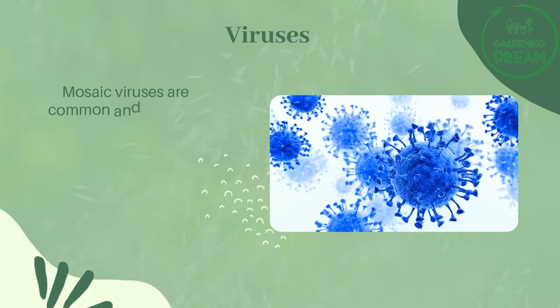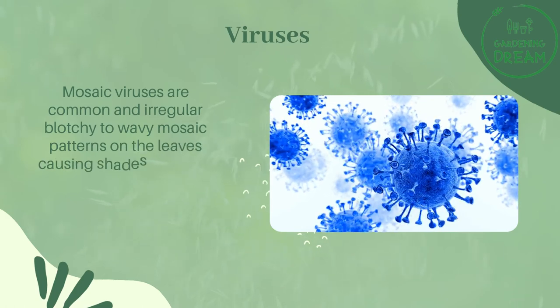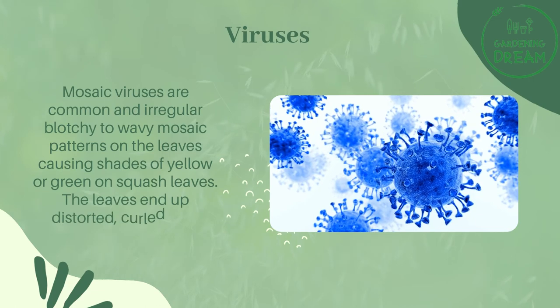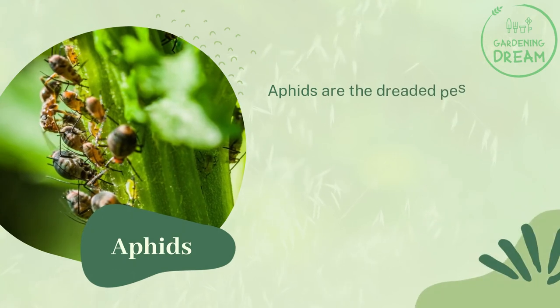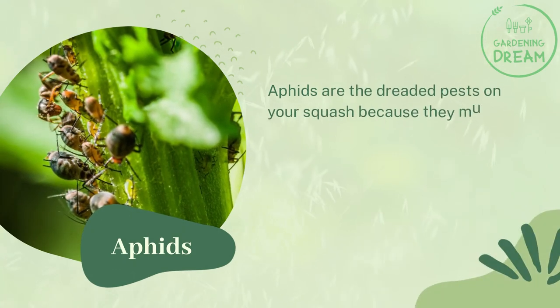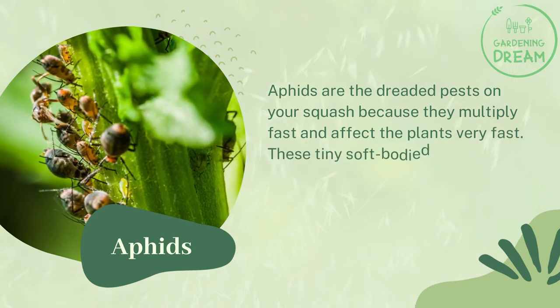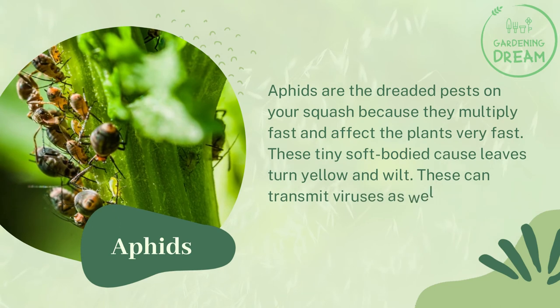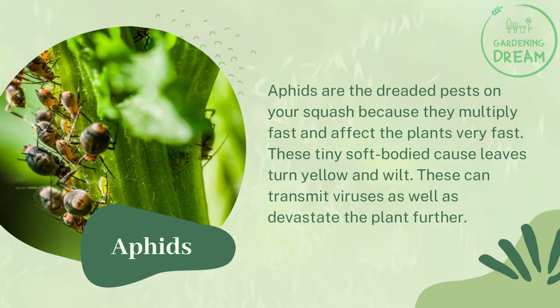Viruses: Mosaic viruses are common and cause irregular blotchy to wavy mosaic patterns on the leaves, creating shades of yellow or green on squash leaves. The leaves end up distorted, curled, and wrinkled. Aphids: Aphids are dreaded pests on your squash because they multiply fast and affect the plants very quickly. These tiny soft-bodied insects cause leaves to turn yellow and wilt, and can also transmit viruses, devastating the plant further.